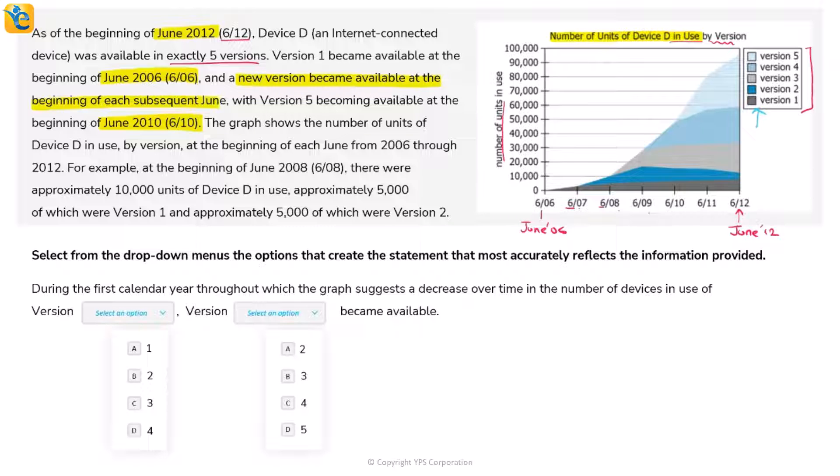A new version became available at the beginning of each subsequent June. The gray section began in 2006, then the dark blue section (Version 2) began in 2007. The next year shows Version 3, then the light blue Version 4, and Version 5 became available in June 2010.